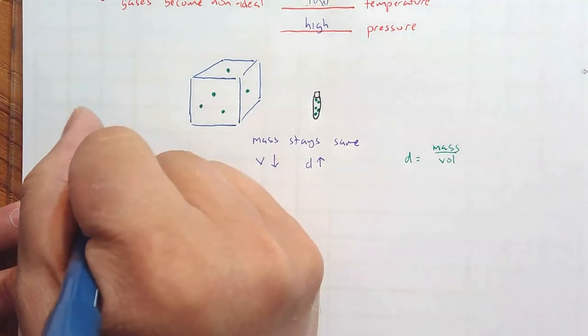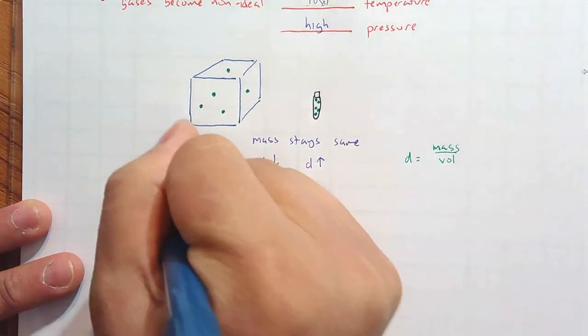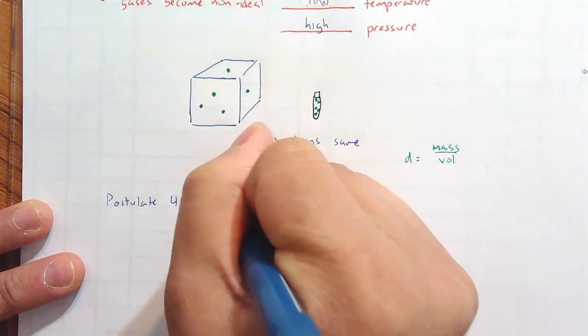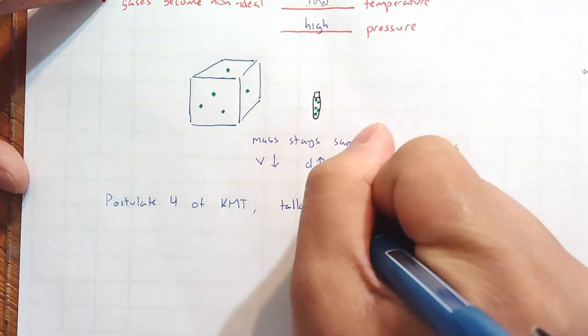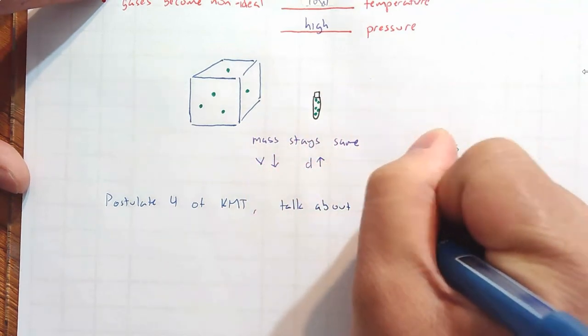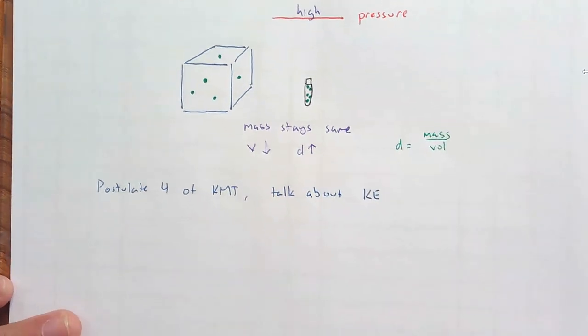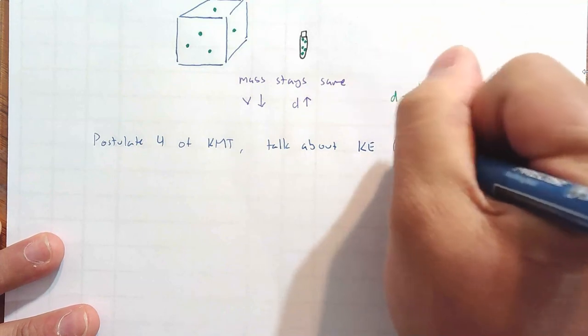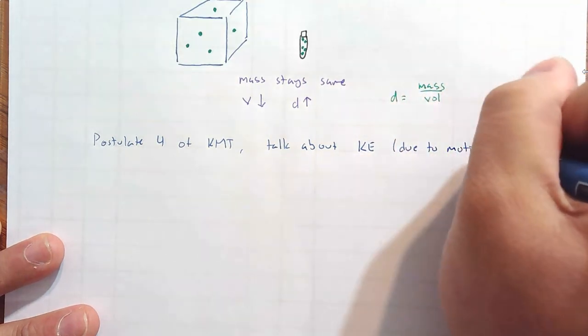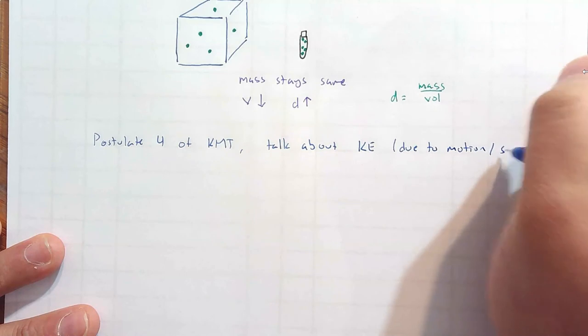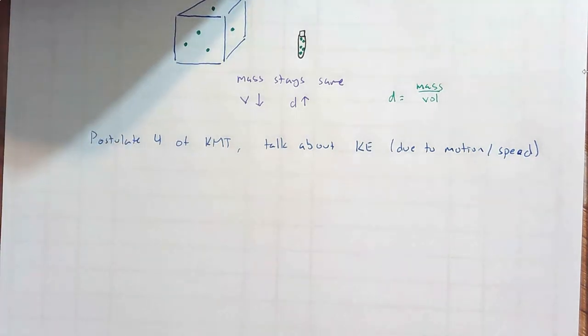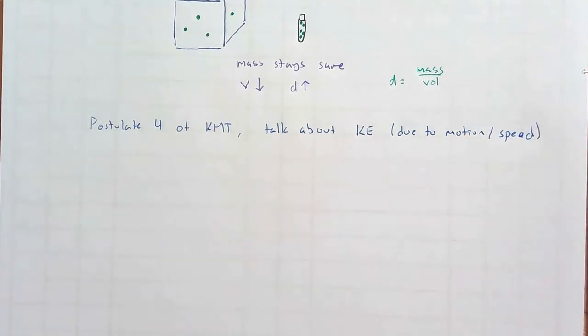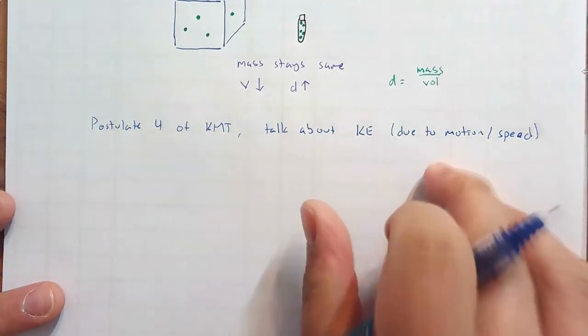In postulate 4 of the KMT, we talked about kinetic energy. We know that kinetic energy is the energy due to motion. And we can think of it as speed, the speed of the molecules. The higher the temperature, the higher the kinetic energy, the higher the average kinetic energy, the higher the average speed of those molecules. And we are going to talk about speed in the next video.